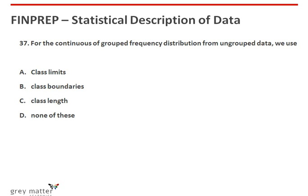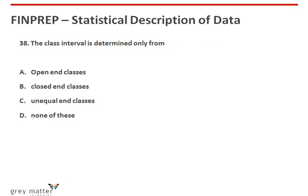Thirty-seventh question: for the continuous grouped frequency distribution from ungrouped data, we use class limits. The answer is option A. Thirty-eighth question: the class interval is determined only from closed end classes. The answer is option B, which says closed end classes.